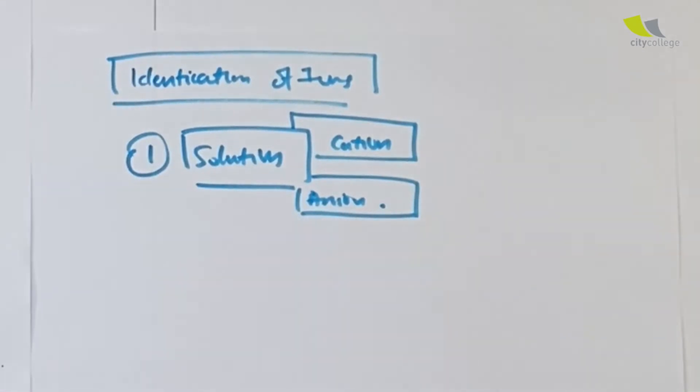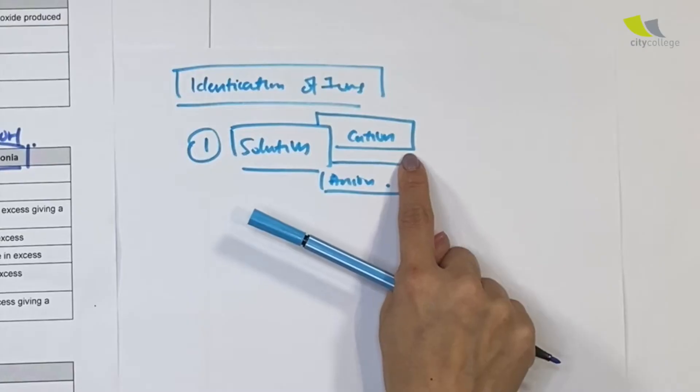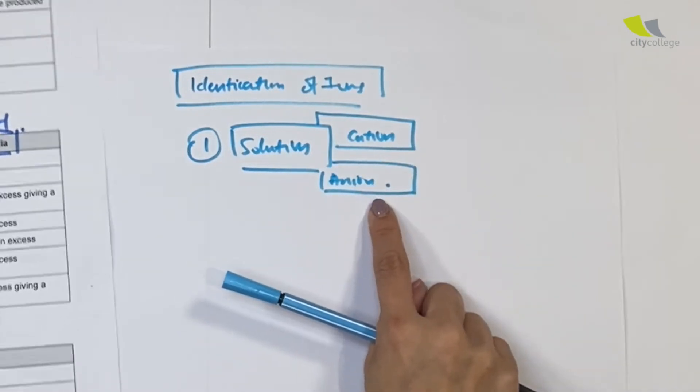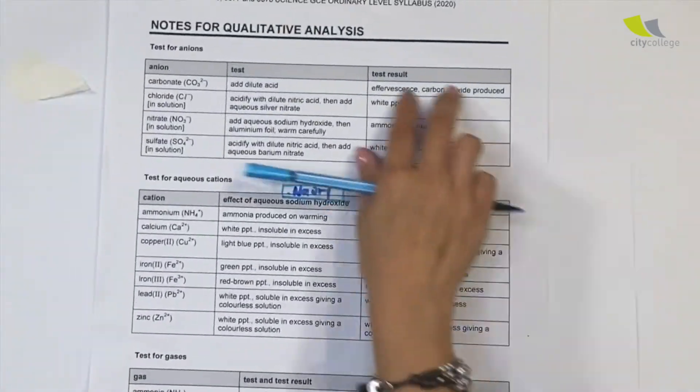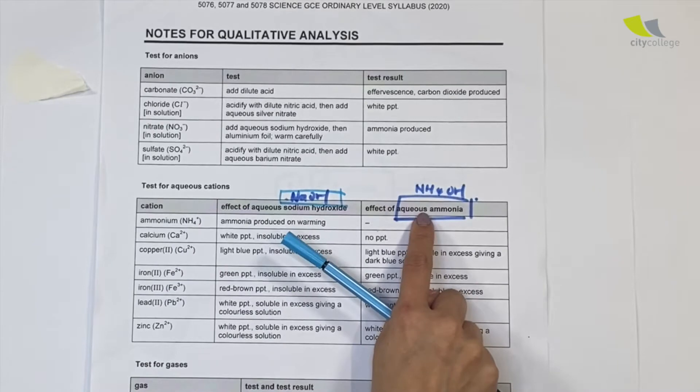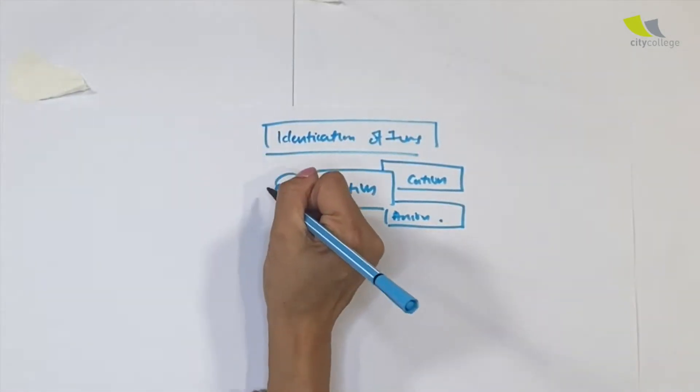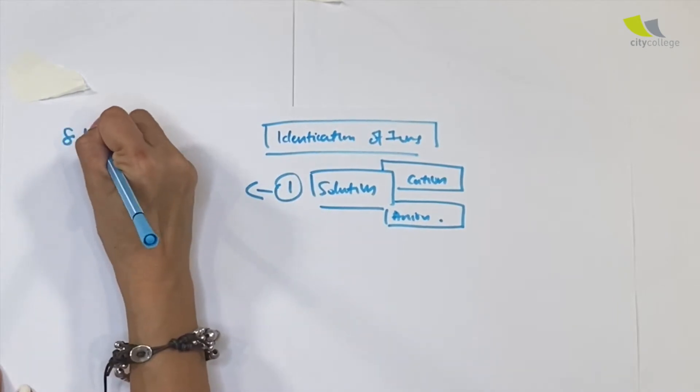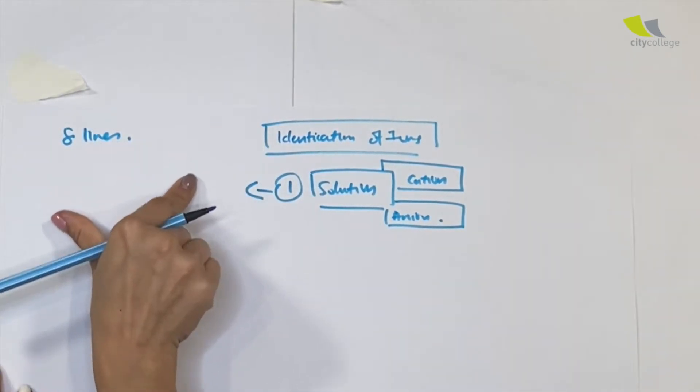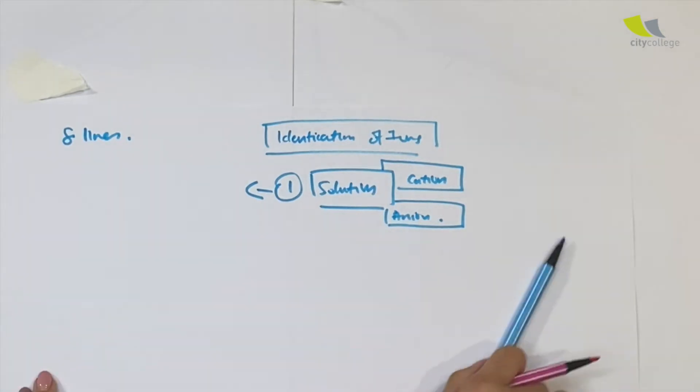First of all, let's look for the heart, which is solution. Next time when you see those kind of questions, always look out for solution. Solution means that you have to look for the cation and the anion. So how do we solve for the cation? Using this paper, you need to look for solution like sodium hydroxide and aqueous ammonia. If you forgot the formula for aqueous ammonia, it's NH4OH.